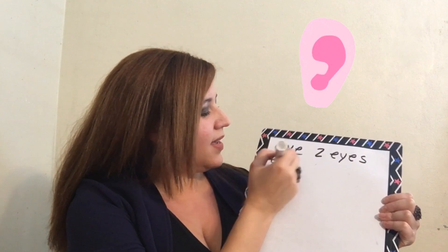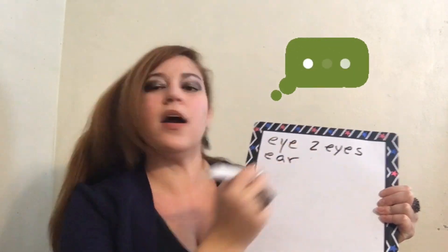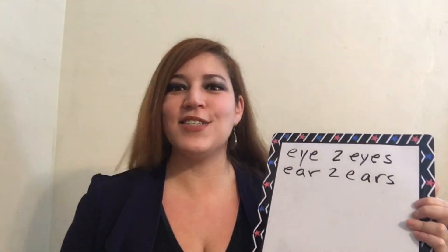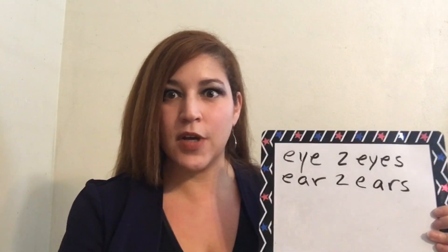Next part that we're going to talk about. What is this, students? This is an ear. How do we spell it? E-A-R. One ear. But how many do we have? We have one ear, two — two ears. So we have one ear, E-A-R-S. Two ears. One eye, two eyes. One ear, two ears. Good.